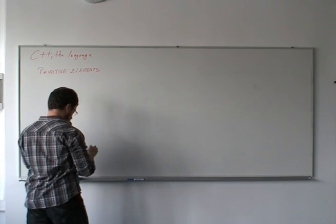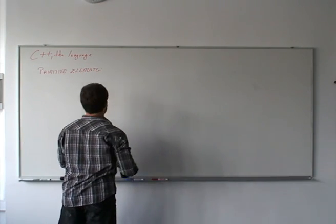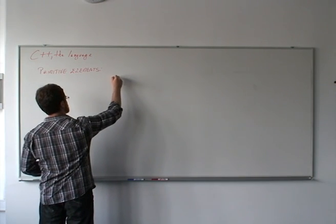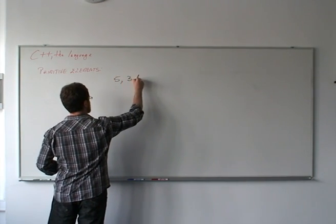Well, one ubiquitous example would be numbers. Numbers such as these: 5 and 3.14.